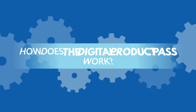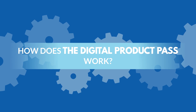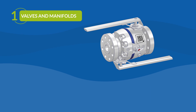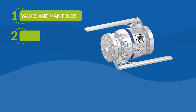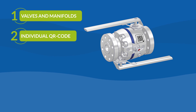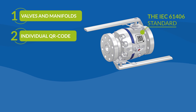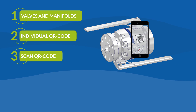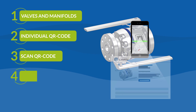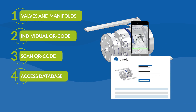But how does the Digital Product Pass work? Just imagine you require various valves and manifolds from AS Schneider for your next maintenance work in your chemical plant. Each of those valves and manifolds is marked with a unique QR code according to the IEC 61406 standard. You can scan each of those unique QR codes to get easy access to the individual digital product pass.